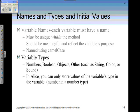Variable types can be numbers, boolean, objects, other such as string, color, or sound. In Alice, you can only store values of the variable's data type in that variable. So for example, if you're creating a number variable, it has to have a number stored as the initial value.